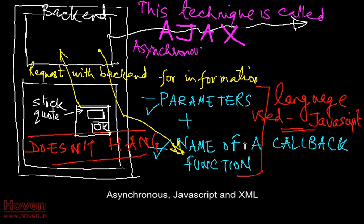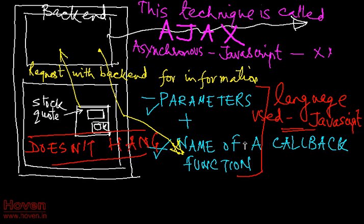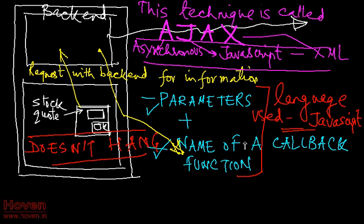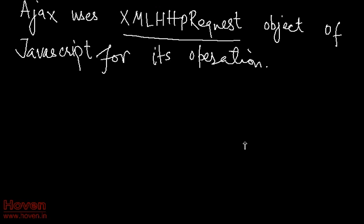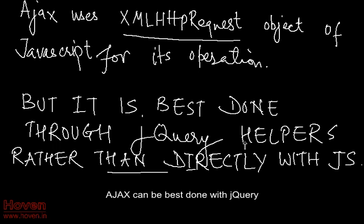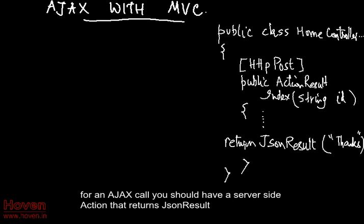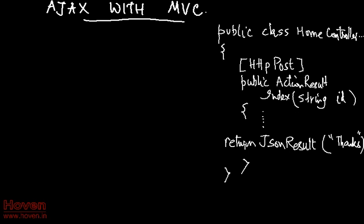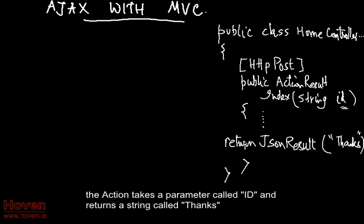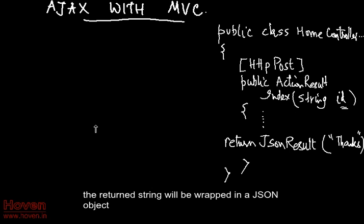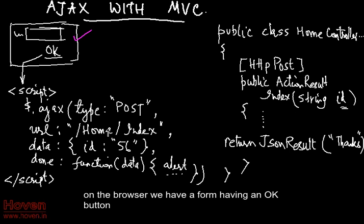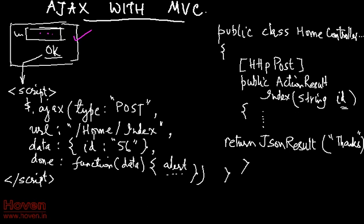Ajax stands for Asynchronous JavaScript and XML. Ajax can be best done with jQuery — Ajax and MVC stitch smoothly with jQuery. For an Ajax call you should have a server-side action that returns a JSON result. The action takes a parameter called id and returns a string called thanks. The returned string will be wrapped in a JSON object. On the browser we have a form with an OK button, and this is a schematic code.